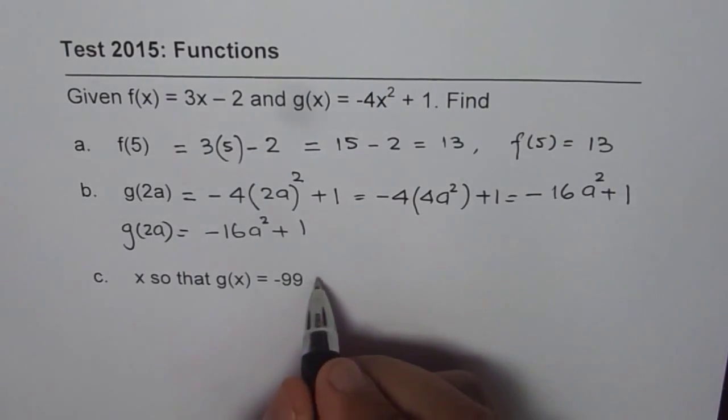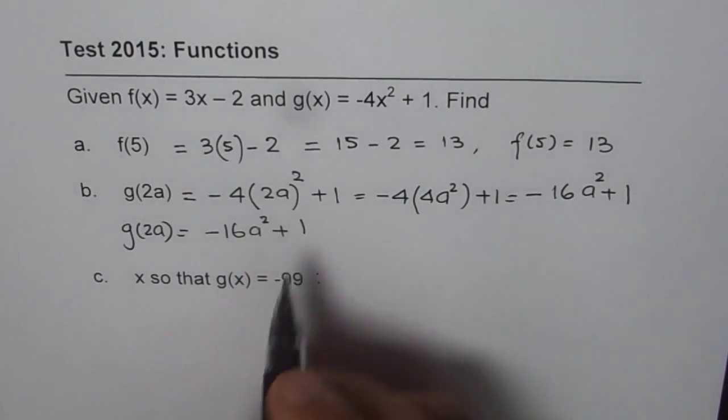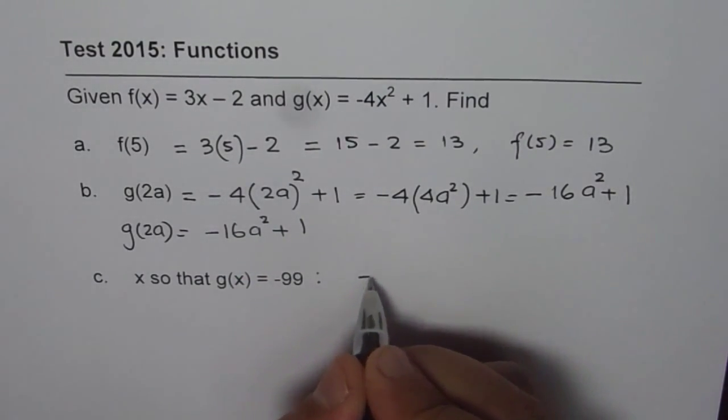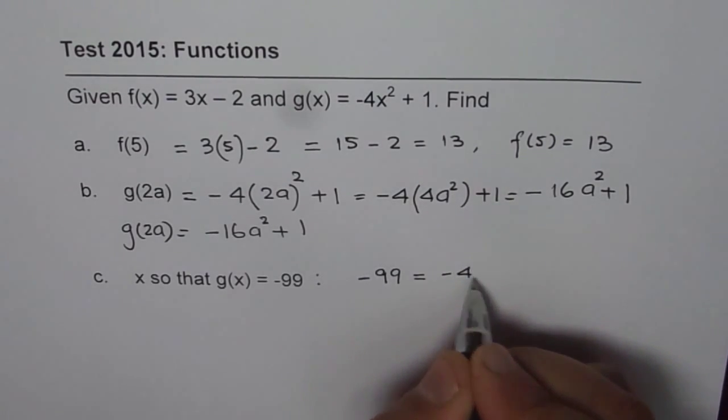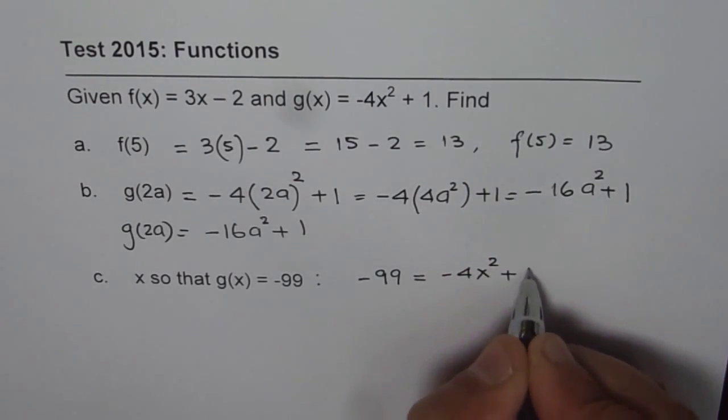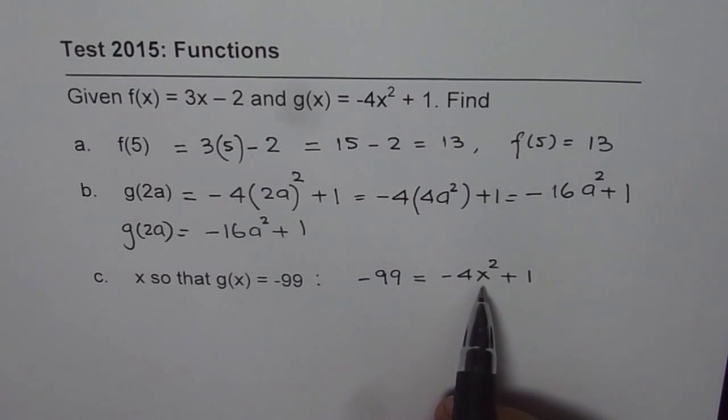So that means in this case we know g(x) is -99. So -99 = -4x² + 1. Solving this equation for x will help us find the answer.